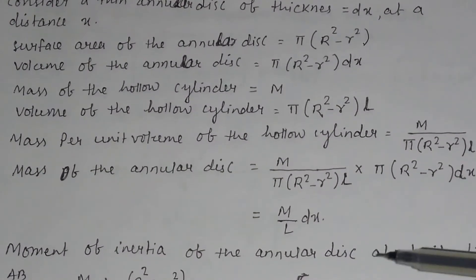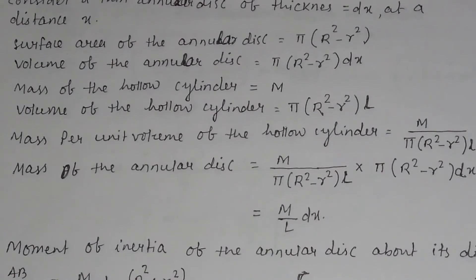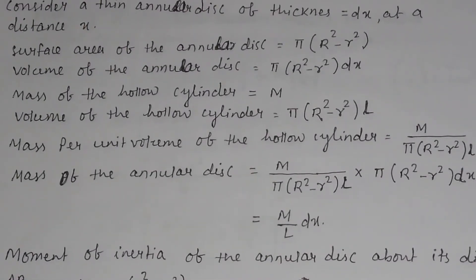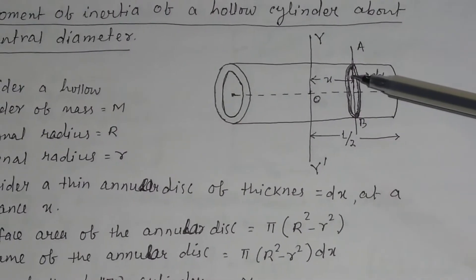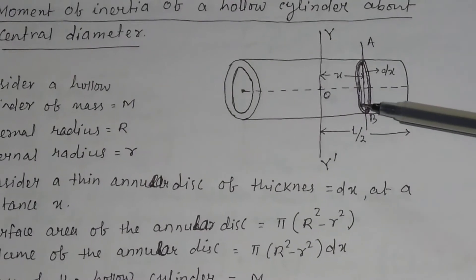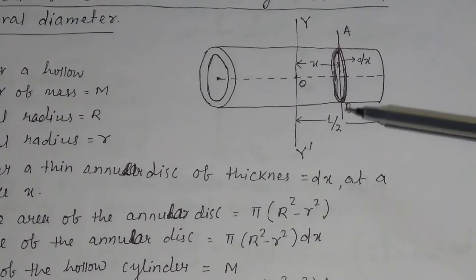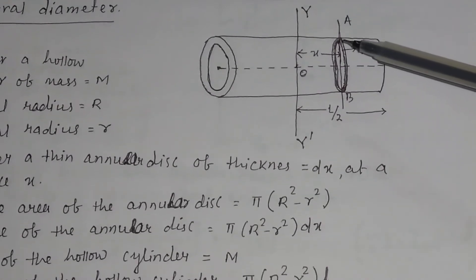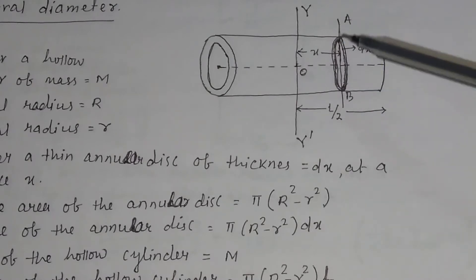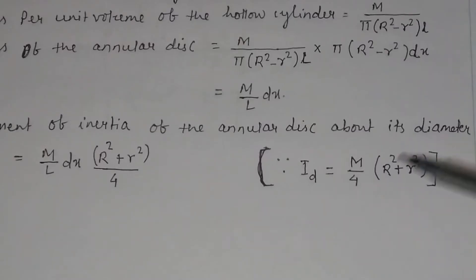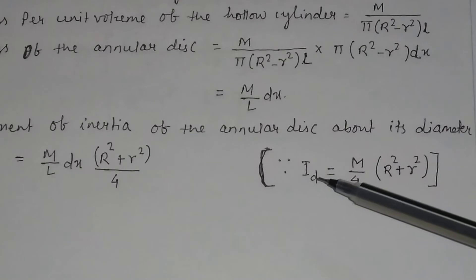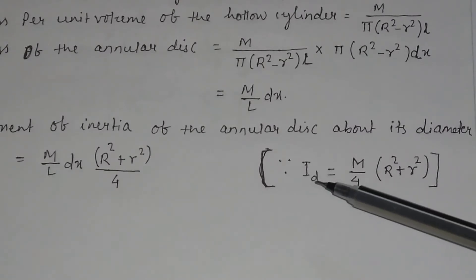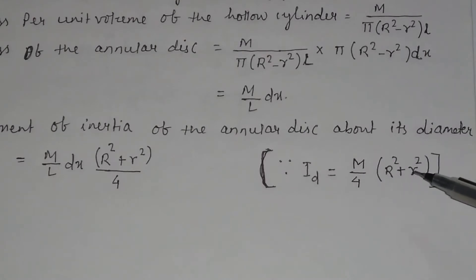We want to calculate the moment of inertia of the annular disc about its diameter. As seen in the figure, we have calculated the mass of the annular disc and a-b is the diameter of the annular disc. We know the moment of inertia of an annular disc about its diameter is I_d equal to m/4 times (R² + r²).